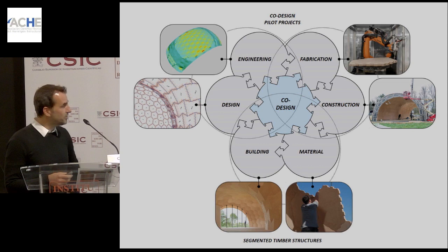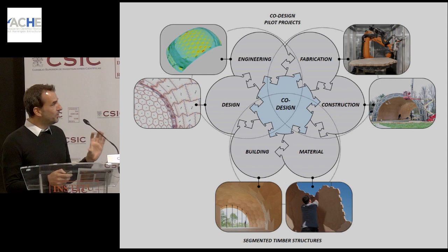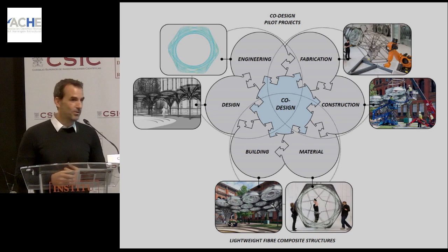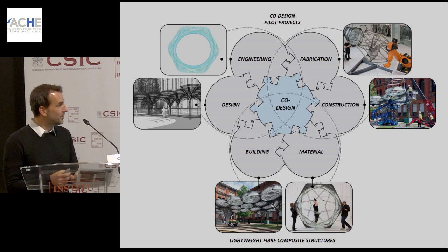One example looks at timber structures — specifically segmented timber shells — showing how this overarching methodology of co-design can work with one of the oldest building materials we have. The other example is at the diametrically opposite end of the construction materials spectrum: glass and carbon fiber load-bearing structures. Both can be tackled with the same methodology.